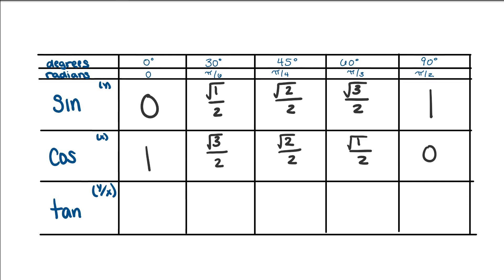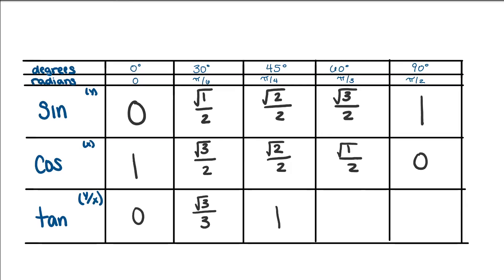For tangent, all we're doing is taking the fraction of sine over cosine in each column. In the first column, we have 0 over 1, which is just 0. Next, we have (1/2) over (√3/2), which when you simplify is √3/3. Then √2/2 over √2/2 is 1. Then √3/2 over 1/2 is √3. And then we have 1 over 0, which is undefined.